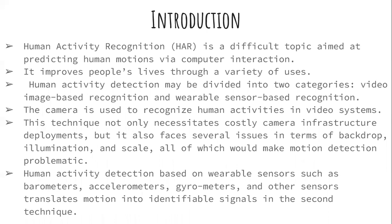Human activity recognition is a difficult topic aimed at predicting human motions via computer interaction. It improves people's lives through a variety of uses. Human activity detection can mostly be divided into two categories: video image-based recognition and wearable sensor-based recognition. In video image-based recognition, a camera is used to recognize human activities in a video system.